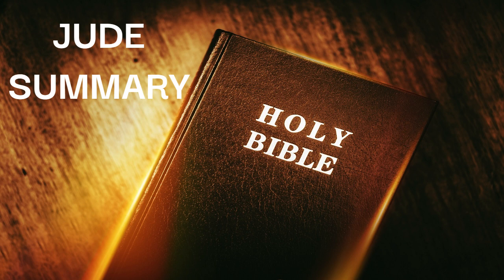3. Examples of God's Judgment: Jude reminds the readers of past examples of God's judgment upon those who rebelled against him, including the Israelites in the wilderness and the fallen angels. 4. Condemnation of false teachers: Jude strongly condemns the false teachers, likening them to ungodly men who follow their sinful desires and speak arrogantly against authorities. 5. Michael the Archangel: Jude alludes to an incident involving Michael the Archangel and Satan, emphasizing the importance of respecting spiritual authority.